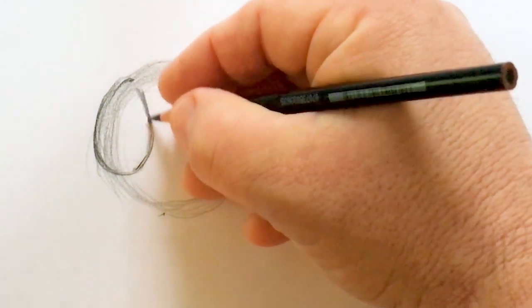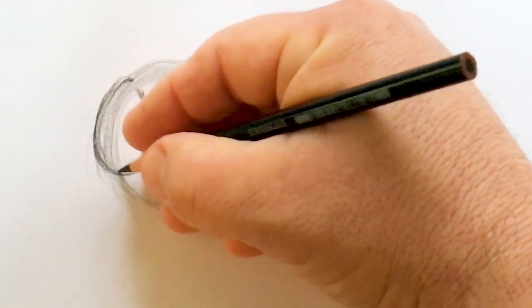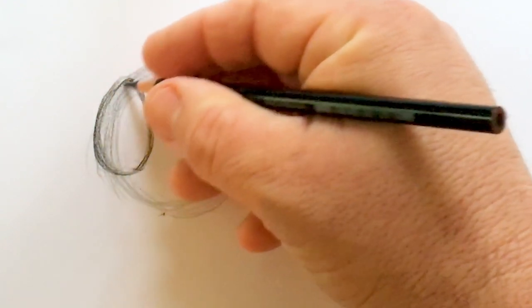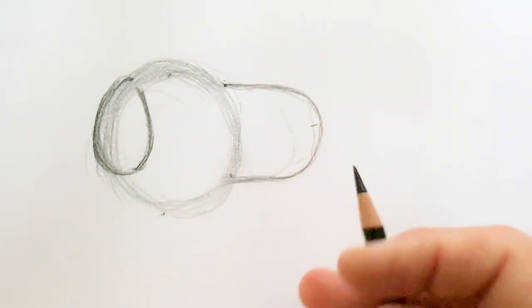These ears are super floppy. They look like a teardrop from the side view, but when Snoopy starts bouncing around doing one of his famous happy dances, they flop all over.